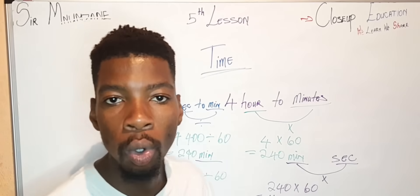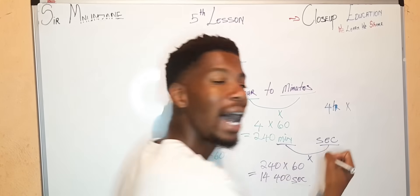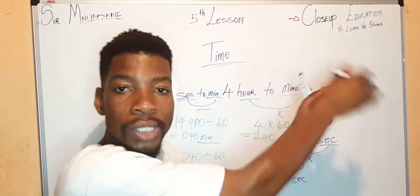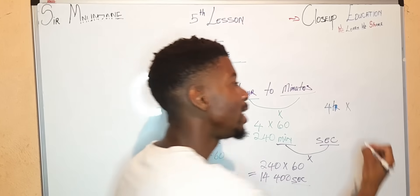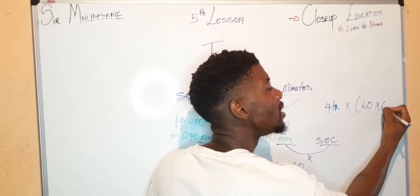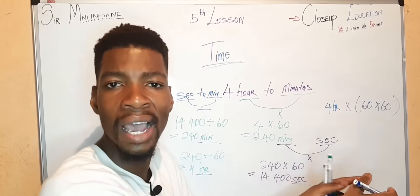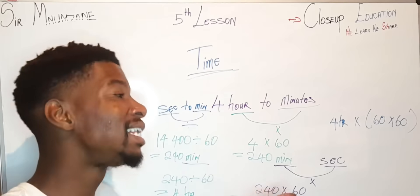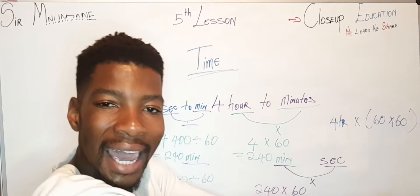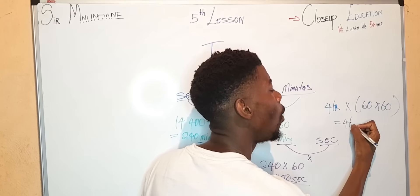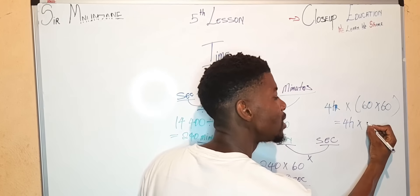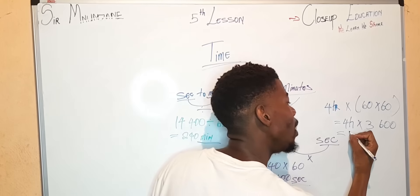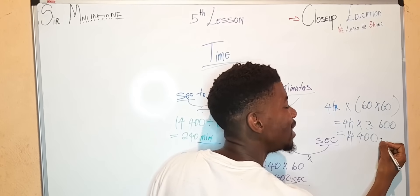Now let's convert directly from hours to seconds. We say 4 hours, and the value we use is 60 times 60, because we use 60 from hour to minute and another 60 from minute to seconds, giving us 3600. So 4 multiplied by 3600 equals 14,400 seconds.